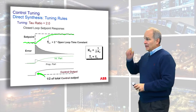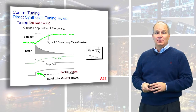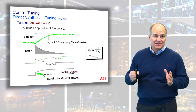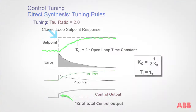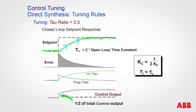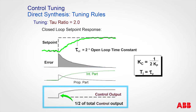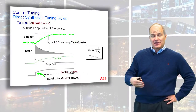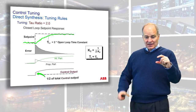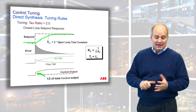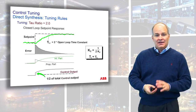At a tau ratio of 2, the closed-loop time constant should be twice the open-loop time constant — it takes twice as long to settle as if you just changed the actuator directly. The proportional looks like the error, and when you add it to the integral you get an initial kick followed by a ramp up. Notice the initial kick is half of the total output change. That's a built-in validation: if you use tau ratio 2 and the initial step isn't half the final step, something is wrong — miscalculated process gain, a non-linearity, or some other error.